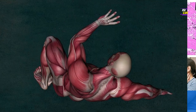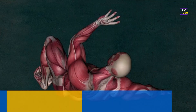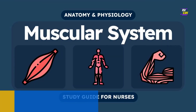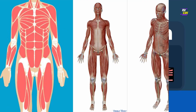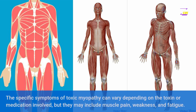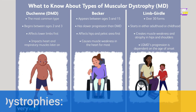3. Toxic Myopathy: Toxic myopathy can be caused by certain medications or exposure to toxins, leading to muscle weakness and pain. The specific symptoms can vary depending on the toxin or medication involved but may include muscle pain, weakness, and fatigue.